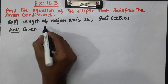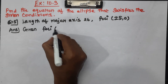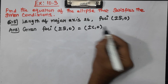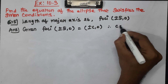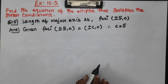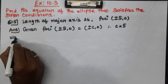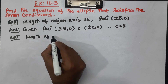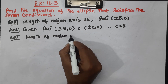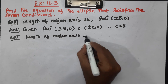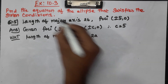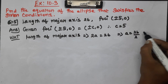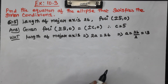Given: the focus is plus or minus 5, 0. Since the focus is plus or minus C, 0, we have c equals 5. The length of the major axis is 2a equals 26, which implies a equals 26 divided by 2, equals 13. So a equals 13.